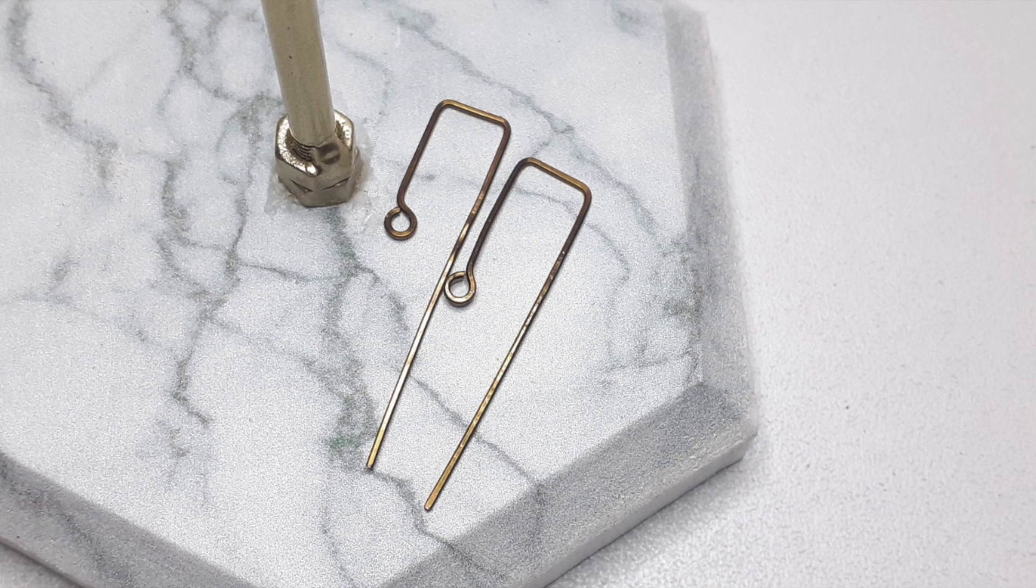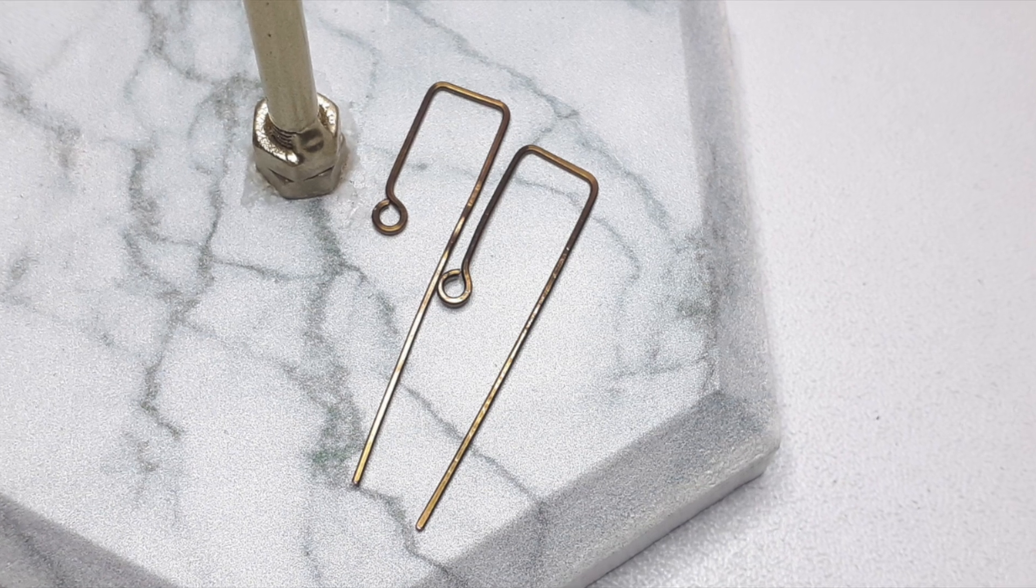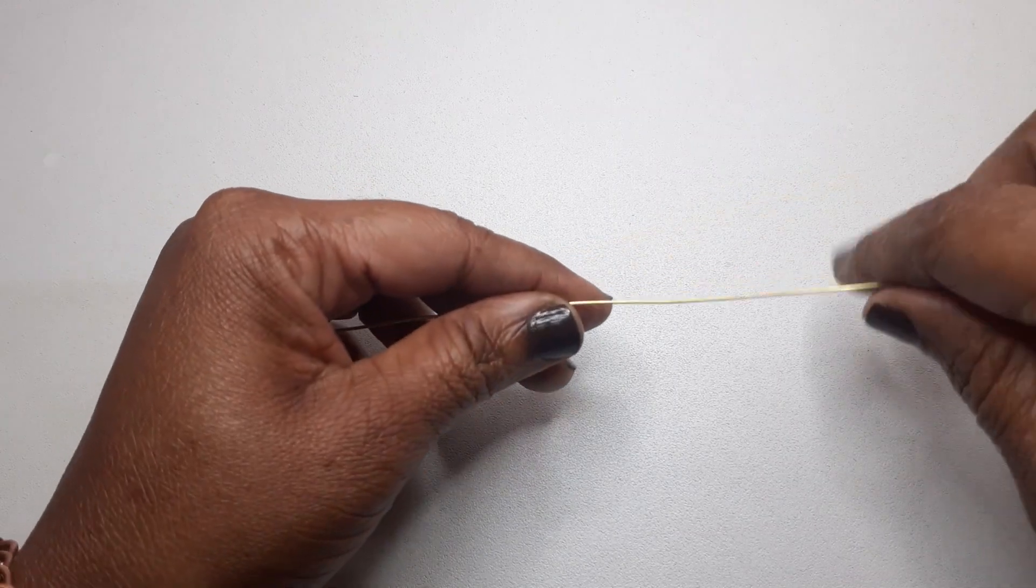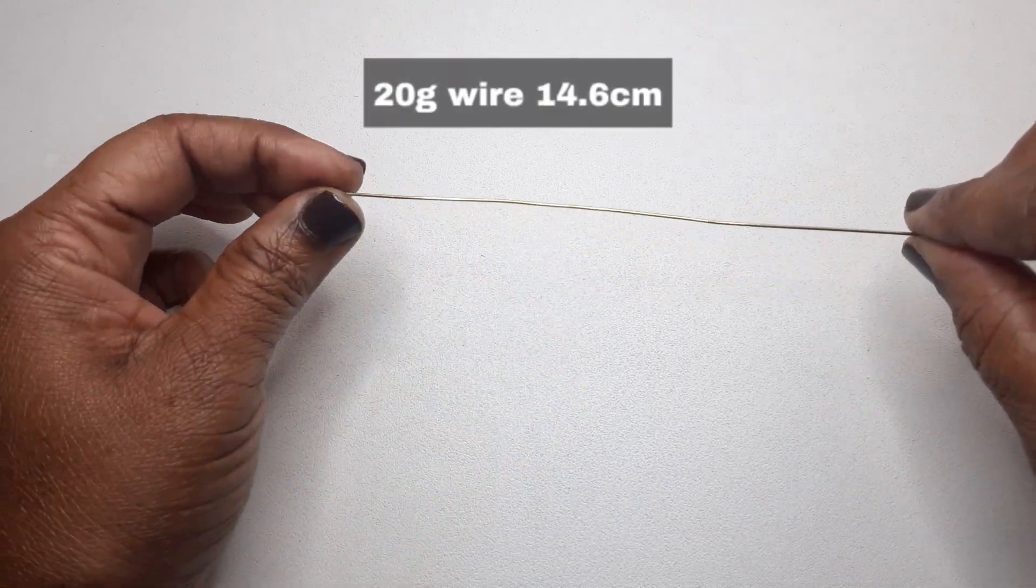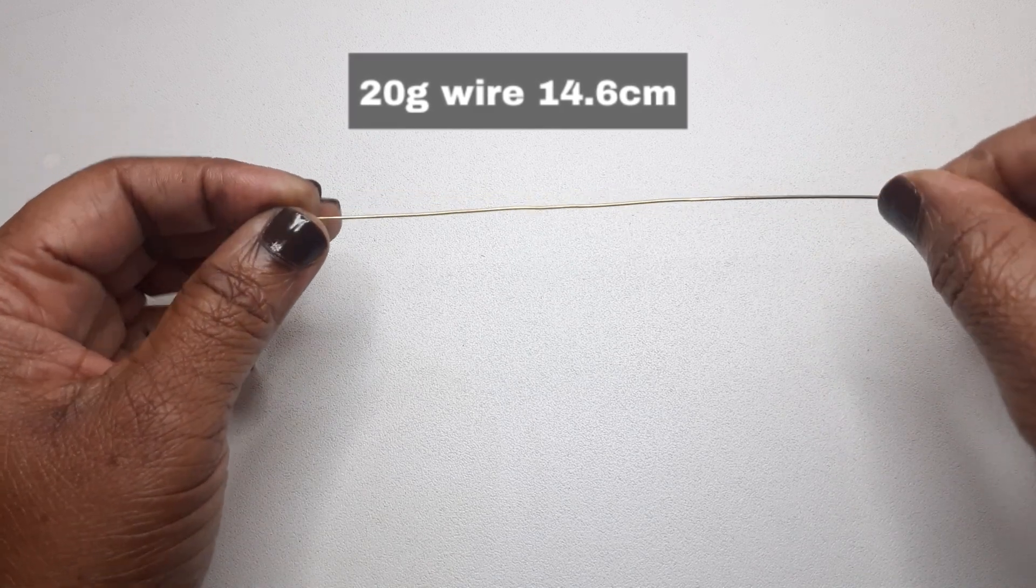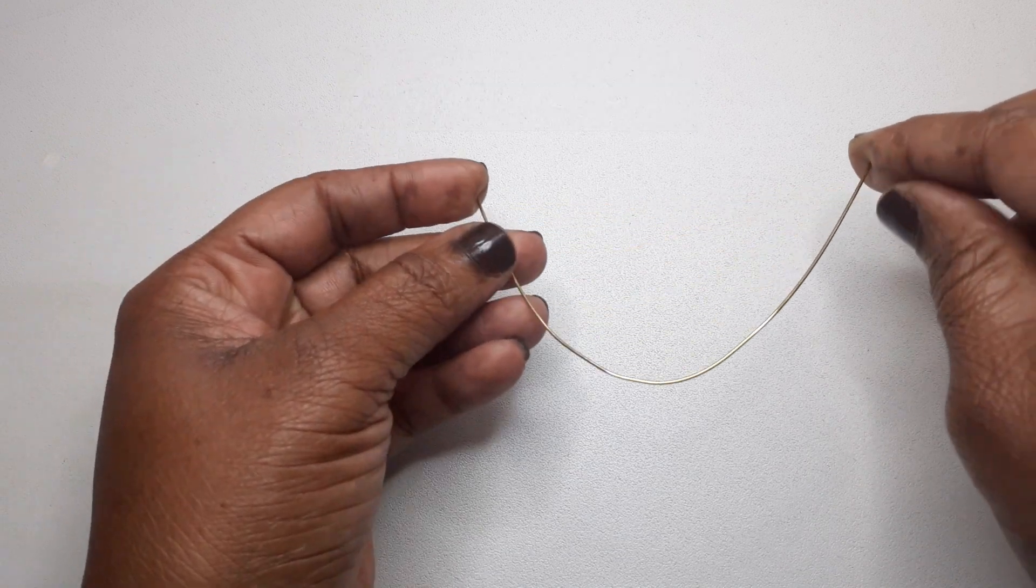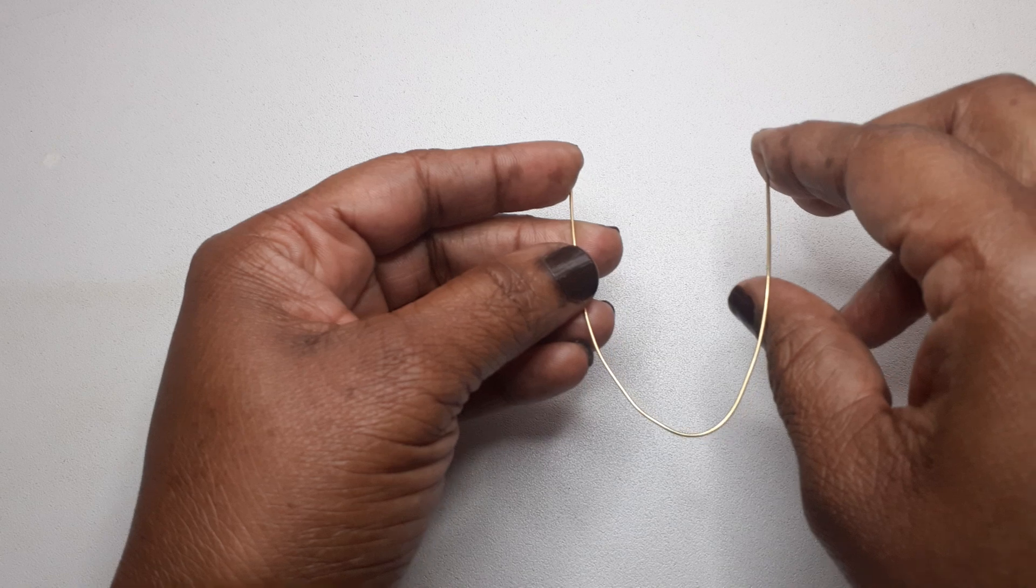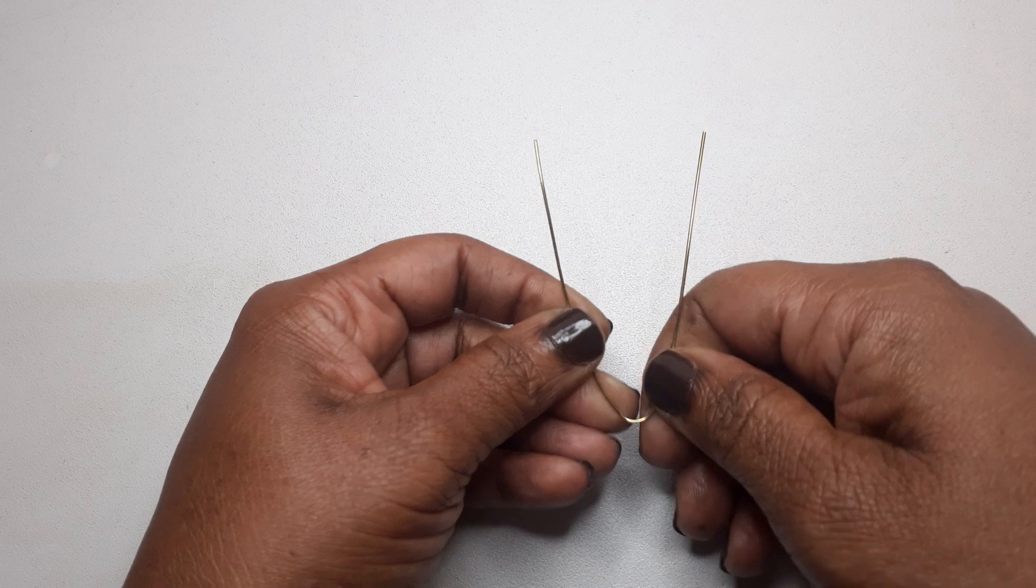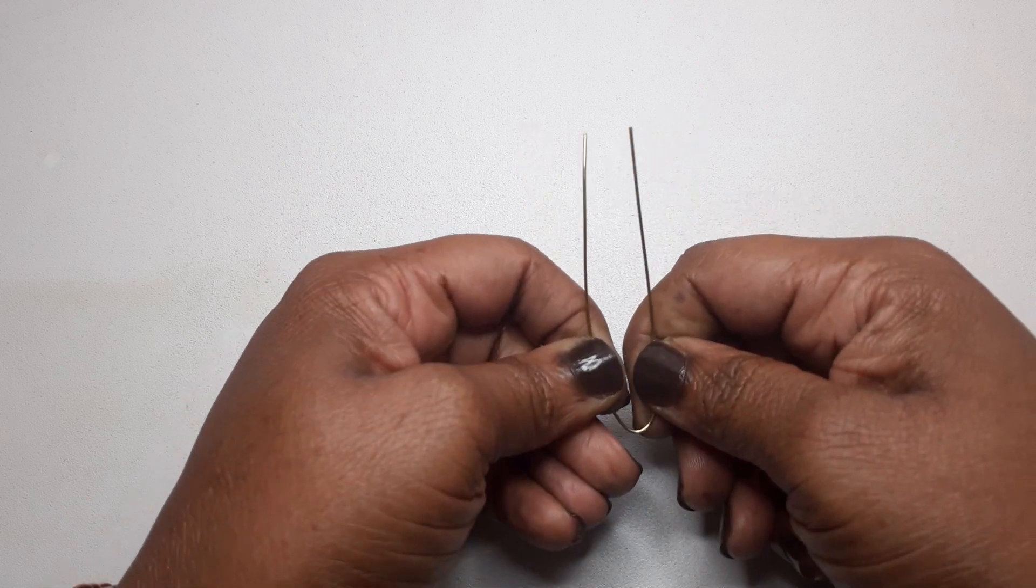Hello and welcome back to my channel. In this video I'm using 20 gauge wire to make rectangular ear wires. As per usual, all the materials used in this video are listed in the description box. I'm starting off by bending the wire, then I'll make a loop at the closed end of the wire.